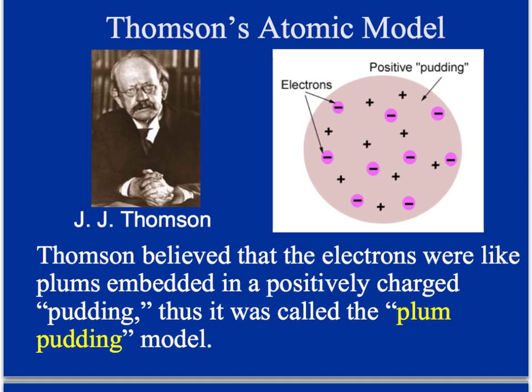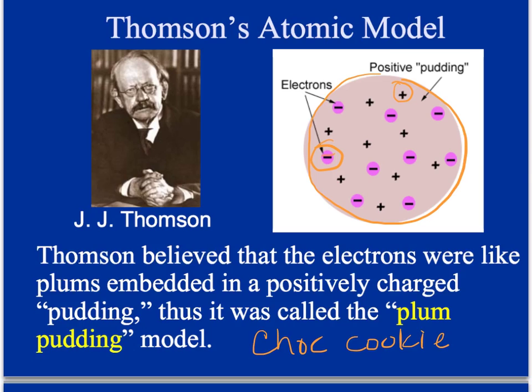Dalton thought of the atom as a solid, hard sphere. Since we changed his model and added that particles could be divided, the next logical step was Thomson's atomic model. Thomson believed that electrons were like plums embedded in a positively charged pudding — called the plum pudding model. I prefer to call it the chocolate chip cookie model: the dough holds all the positively charged particles, and the chocolate chips are the negatively charged electrons. So think of the dough as positive charges and the chocolate chips as negative charges — that was Thomson's atomic model.